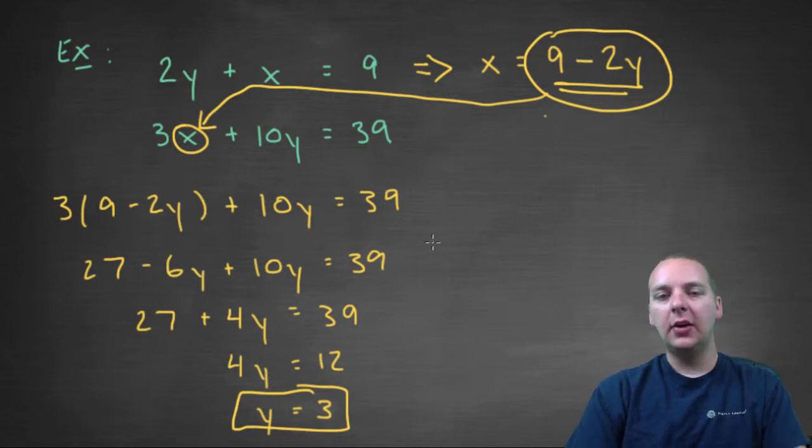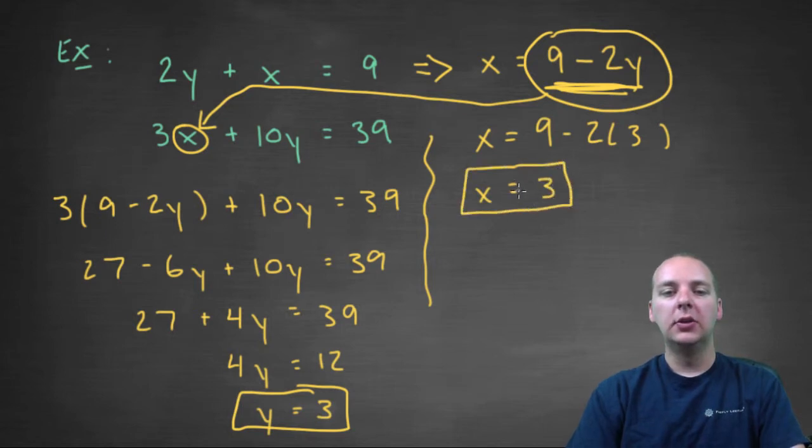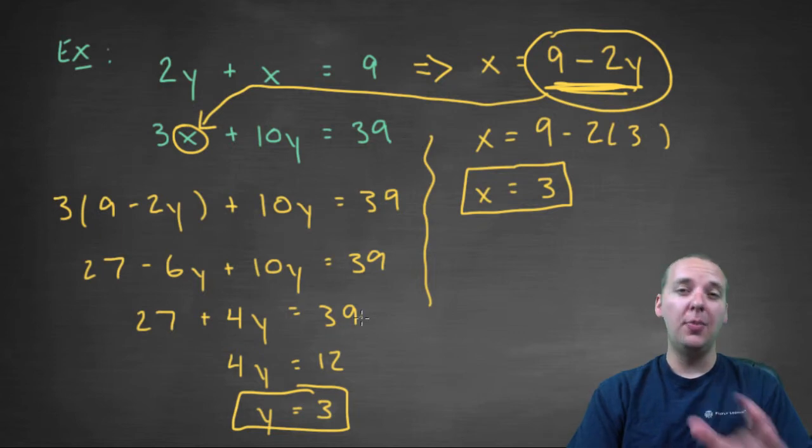I would take this guy and go back up to the equation that has x in it. Plug in your y, so that you can solve for x. X would be 9 - 2y, but we just figured out that y was 3. So the x would be 9 - 6, which would be 3. So the solution to this system is (3, 3). And the method that we used was the substitution method, solving for one variable and substituting it into another.